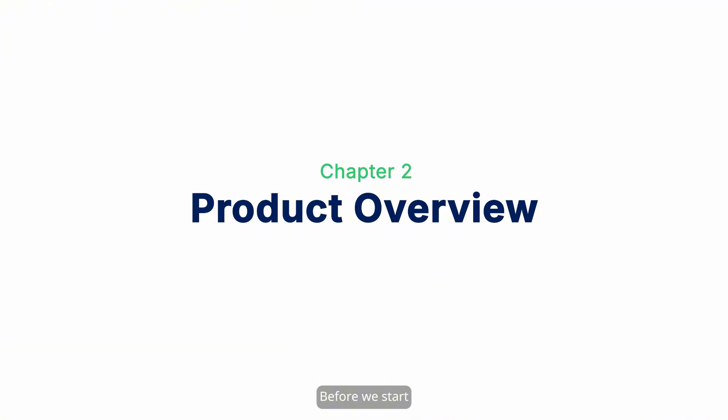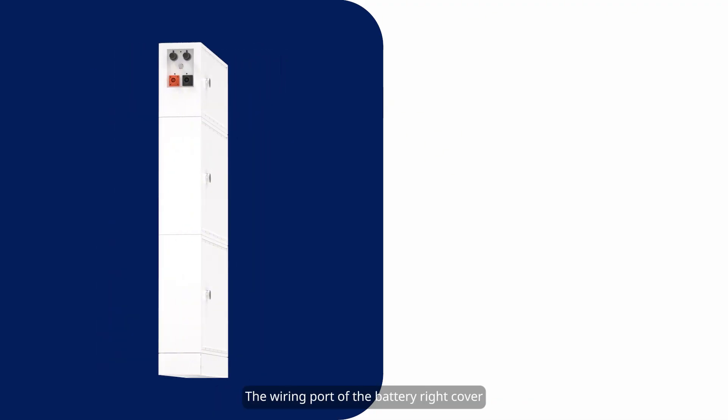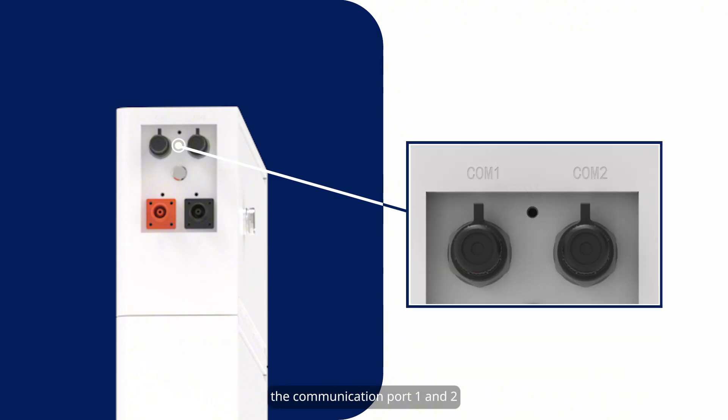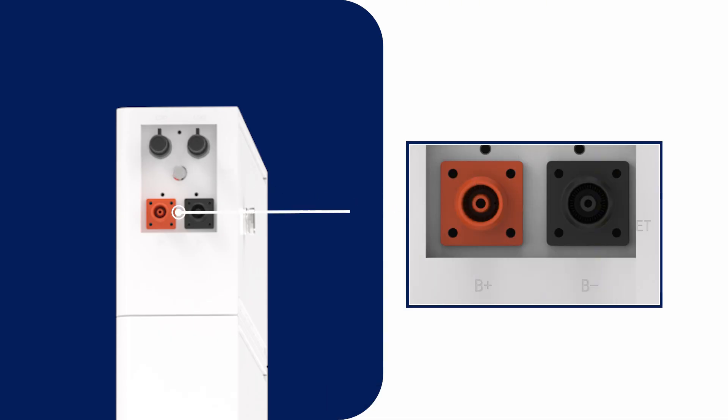Before we start, let's take a look at the ports on this low-voltage battery for better understanding the installation process. The wiring port of the battery right cover, from the top to the bottom: The communication port 1 and 2, reset button, battery positive and negative connection port.